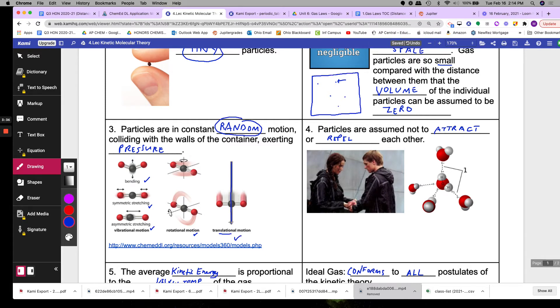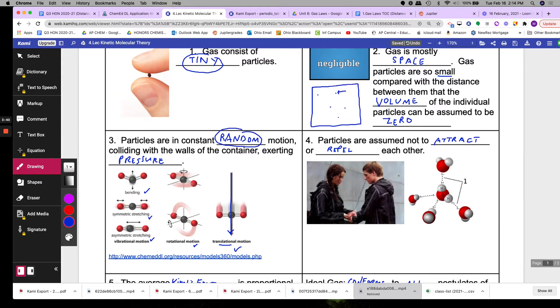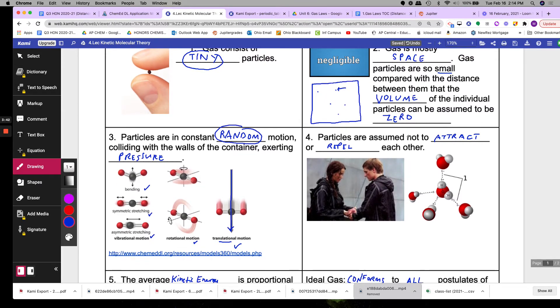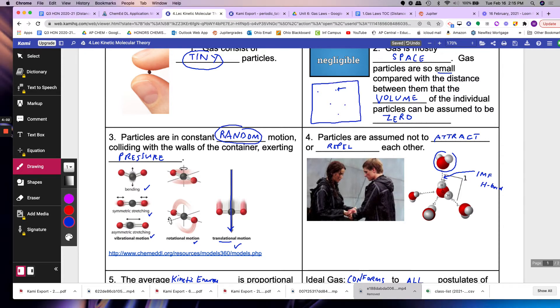The fourth postulate to this theory is that particles are assumed not to attract or repel each other. These are water molecules and the force between them is called an intermolecular force, IMF, called hydrogen bonding. In a gas phase these molecules are not allowed to attract or repel, which means the IMF between them is not supposed to be there.